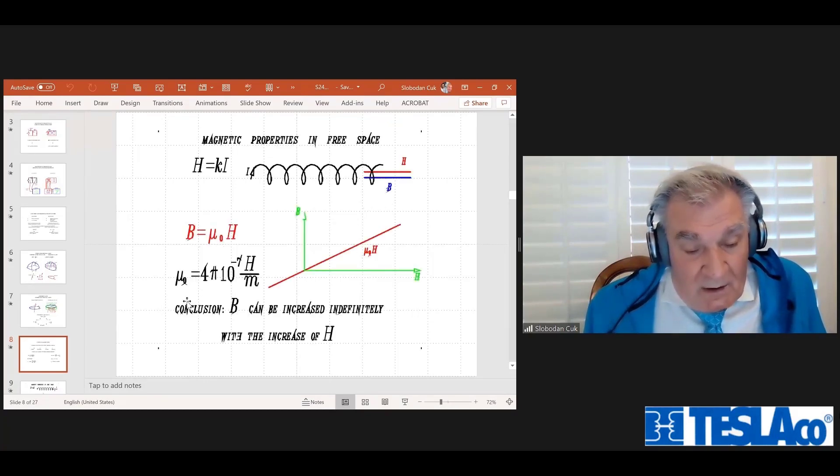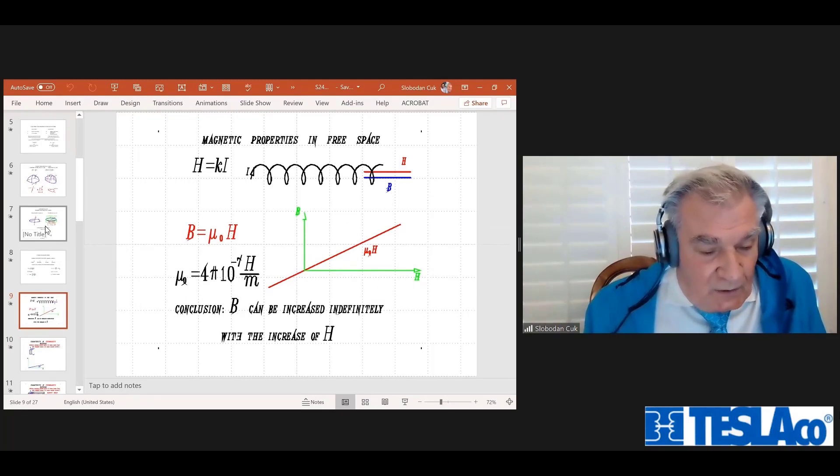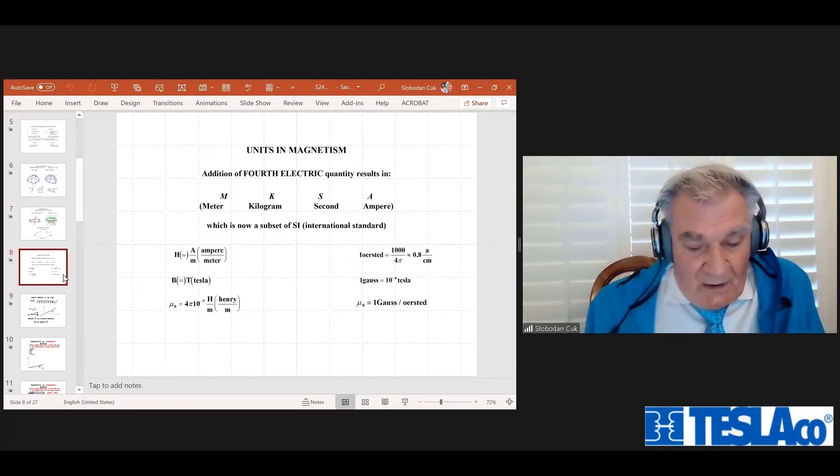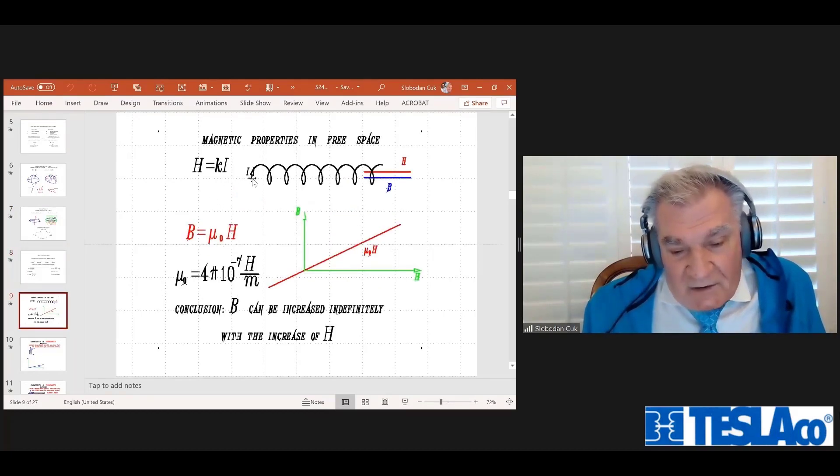Now comes the important thing, which I want you to really comprehend. And that is, when we have this H field - remember, the current drives the flux in a coil and it's proportional. And then once you have this flux, then the flux density is B = μ₀ × H. So what I'm trying to prove here is that flux density increases with μ₀, which is very small. So if you have a coil and no magnetic material in it, it can take a long time to get some decent flux density.